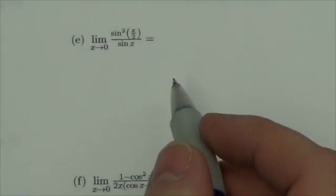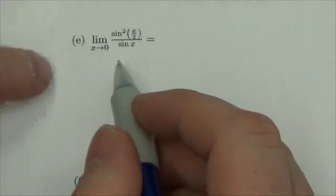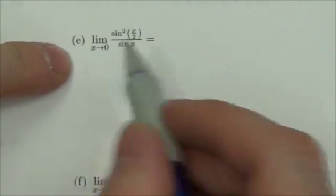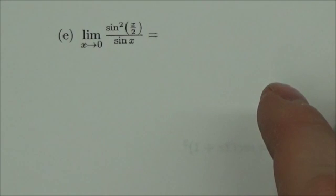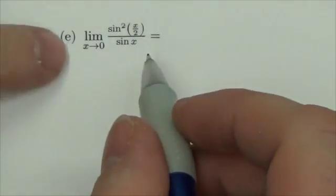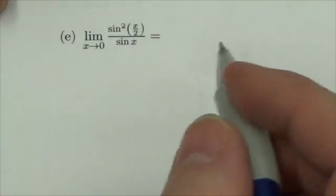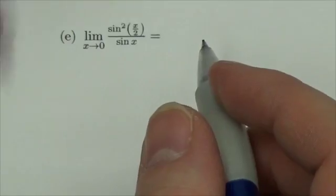Okay everybody, we're looking through the Math 31 trigonometry review. This is question 1e: take the limit as x approaches zero of sine squared of x over 2, over sine of x. What I'm looking for here is that basic trig identity, sine of x over x.